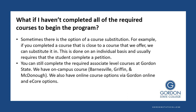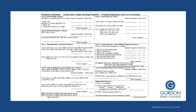We have on-campus courses at Barnesville, Griffin, and McDonough, and we also have online course options via Gordon Online as well as eCore. This is the advisement worksheet for the elementary education program — all the courses you would need to complete before you start the ParaPro to Teacher program. We are going to walk through each of these sections so that you know what courses you need to complete before you start the program.